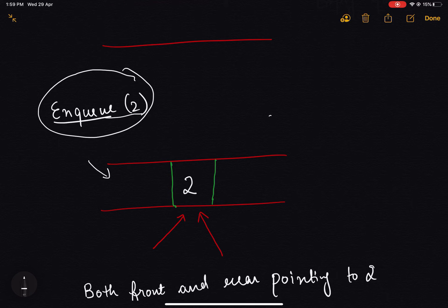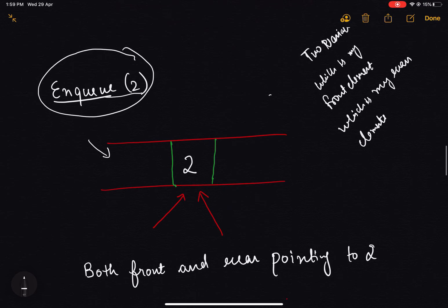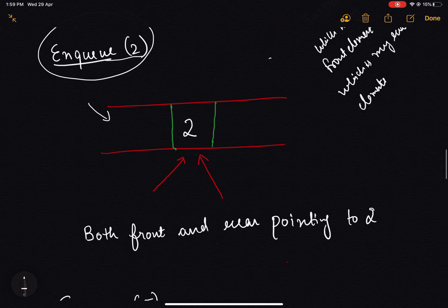As we know, we need to maintain two pointers or two variables which keep track of which is my front element as well as which is my rear element, so that the implementation becomes easy.